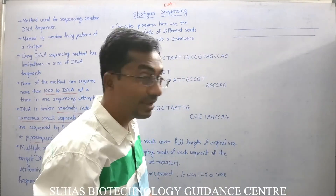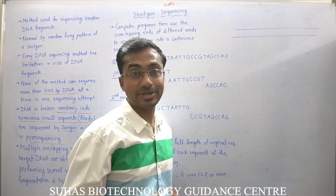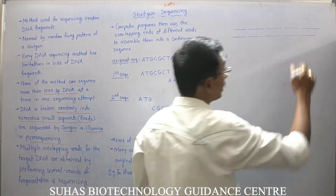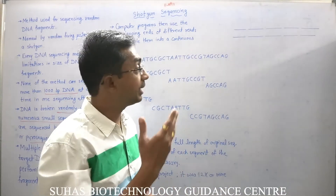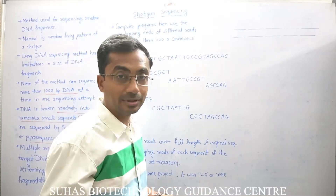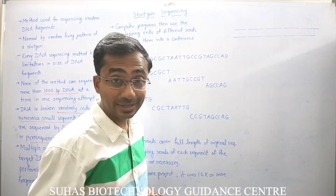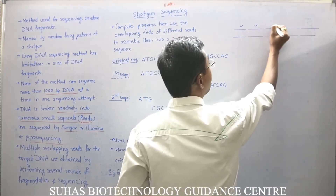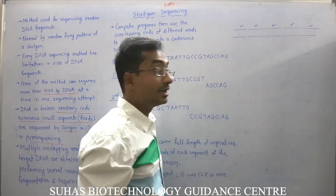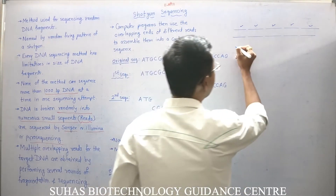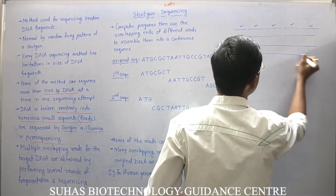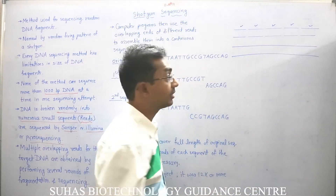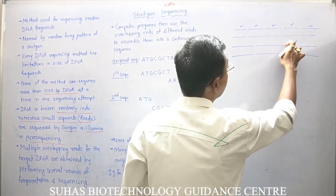Suppose this is the complete genome or the big DNA which we want to sequence. We will first break it into small pieces using any method — such as restriction endonucleases or chemicals used to break DNA — and then sequence each of these fragments. The next time, we break the same DNA using a different technique, a different endonuclease, or a different chemical, so it breaks at different positions.